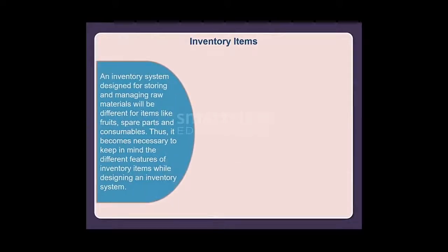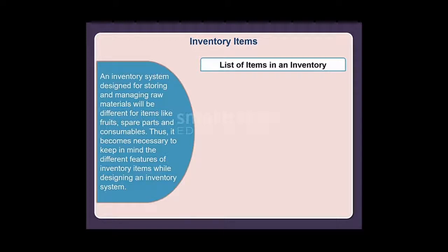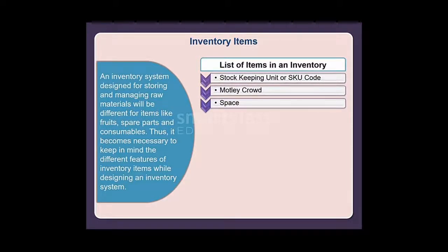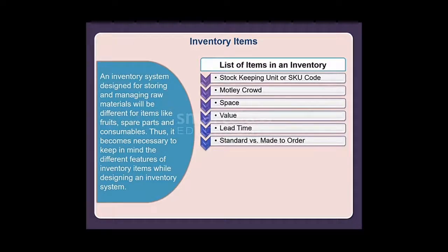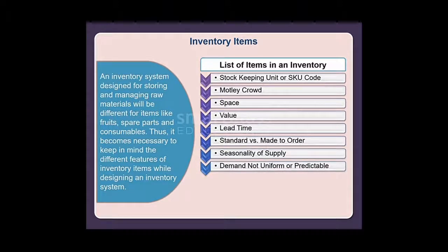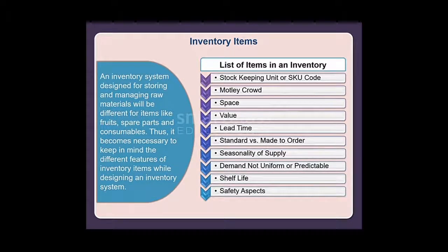An inventory system designed for storing and managing raw materials will be different for items like fruits, spare parts, and consumables. It becomes necessary to keep in mind the different features of inventory items while designing an inventory system. Here is a list of items in an inventory: stock keeping unit (SKU) code, motley crowd, space, value, lead time, standard versus made-to-order, seasonality of supply, demand (not uniform or predictable), shelf life, safety aspects, and obsolescence.